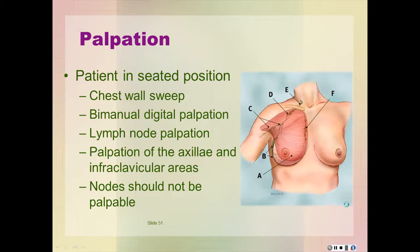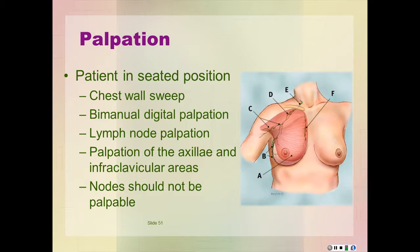The bimanual digital palpation technique involves placing one hand, palm surface facing up, under the patient's right breast. Position your hand so it acts as a flat surface against which to compress the breast tissue. With the fingers of the other hand, walk across the breast tissue, feeling for lumps as you compress the tissue between your fingers and your flat hand. Repeat with the other breast.